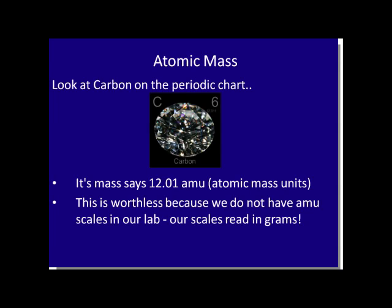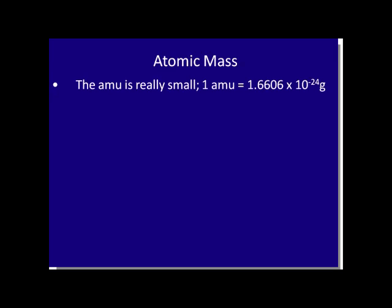For us, this is really not very useful because we do not have AMU scales in our lab — our scales read in grams. We do know a relationship between AMUs and grams: 1 AMU is equal to 1.6606 times 10 to the negative 24th grams. Since we've talked about scientific notation, we know that times 10 to the negative 24th is a very, very small number.